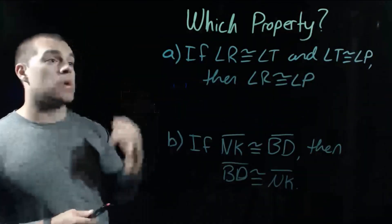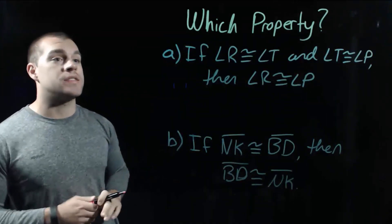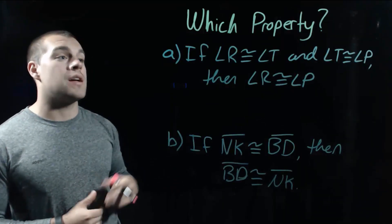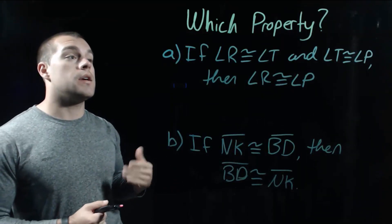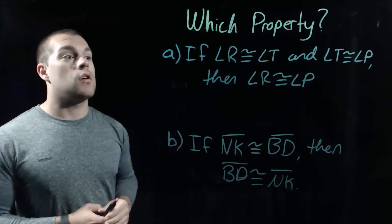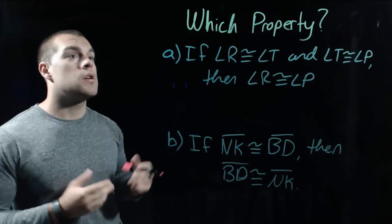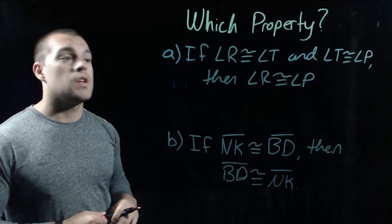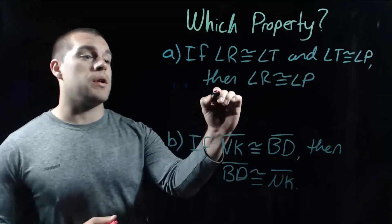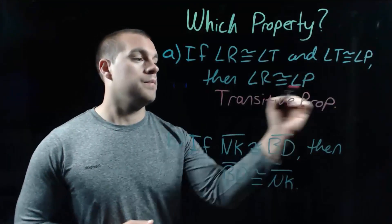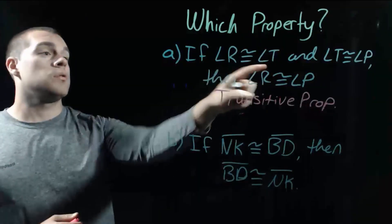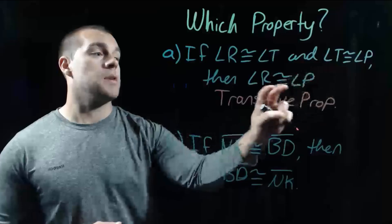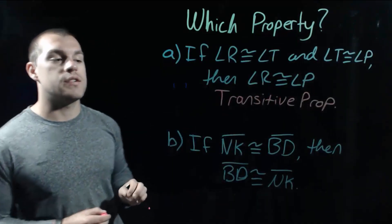In our last example, we're looking at which property is being shown by the statements. Part A says: if angle R is congruent to angle T, and angle T is congruent to angle P, then angle R is congruent to angle P. This is going to be our transitive property — we've got angle R congruent to angle T, and T congruent to P, so R has to be congruent to P.